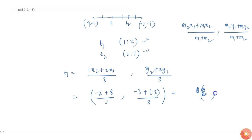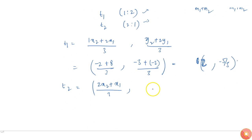The other point t2 will become (2·x2 + x1)/3, (2·y2 + y1)/3.